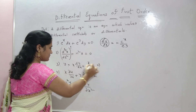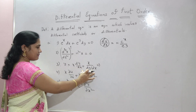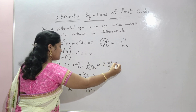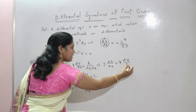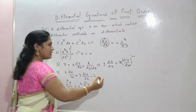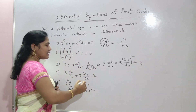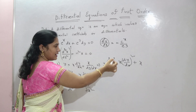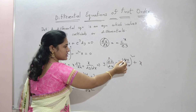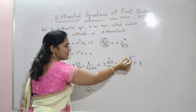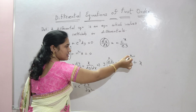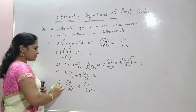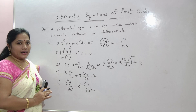For the third equation, rearranging and multiplying both sides by dy/dx gives: y(dy/dx) + x(dy/dx)² + x. The highest derivative is order 1, so the order is 1. The power of the highest order derivative is 2, so the degree is 2. This equation is first order, second degree.